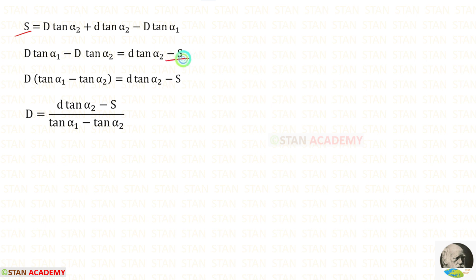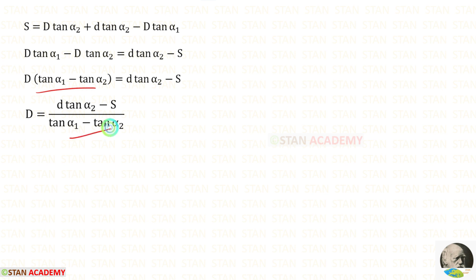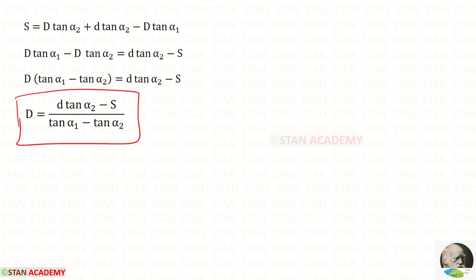We take S to the other side, so it comes as negative. Taking the two tan terms to the other side with change of signs, we take D outside as a common factor. Rearranging, D comes to the denominator, giving us the expression for D.